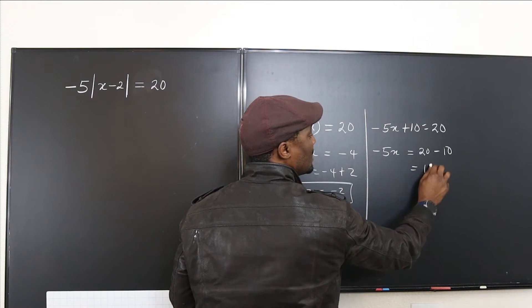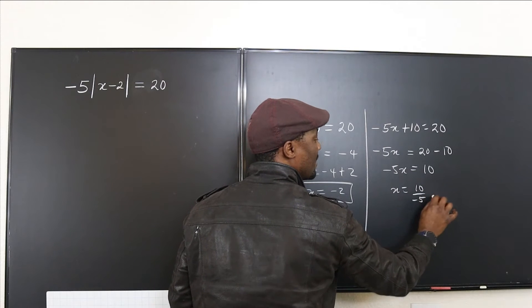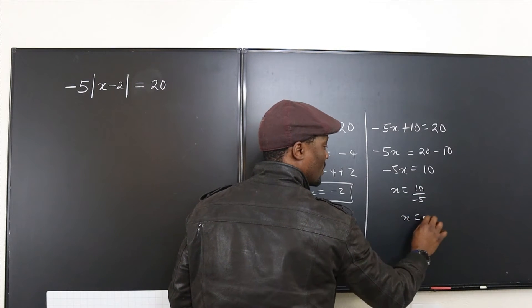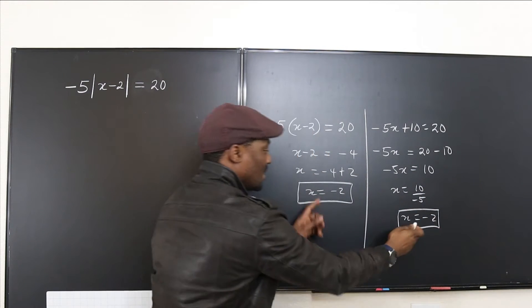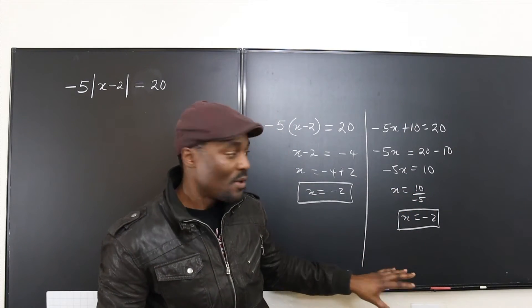Then you can say x is 10 over negative 5, so x equals negative 2. The same answer arrives. So whether you divide both sides by negative 5 first or you distribute, you follow the exact same steps. However,